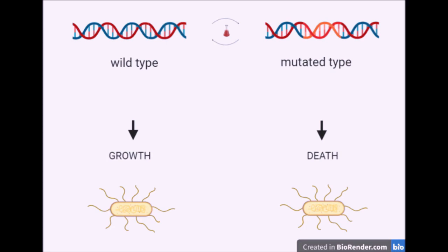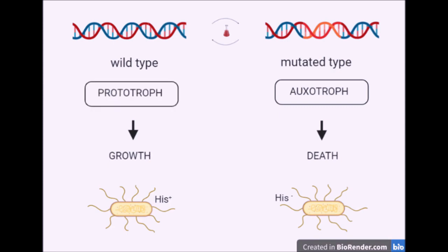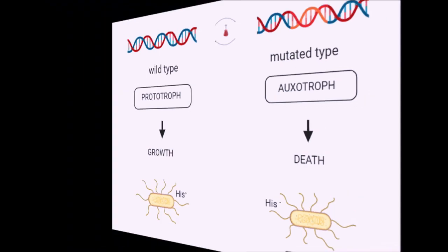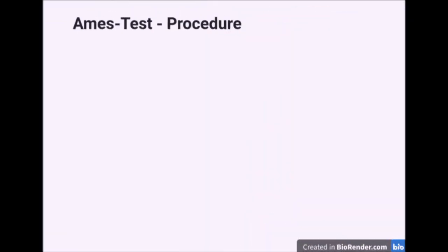Salmonella typhimurium is a commonly used bacterial strain in the Ames test, with the mutation affecting the synthetic pathway of histidine. His+ stands for the ability to synthesize the amino acid histidine; His− describes the requirement for an exogenous histidine source. Microorganisms depending on exogenous amino acid sources are classified as auxotroph, whereas the form of nutrition requiring only simple nutrients is classified as prototroph. The wild type, which is the His+ bacteria, is prototroph and therefore survives on histidine-free culture media.